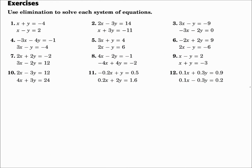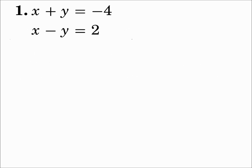Use elimination to solve each system of equations. Number one: x plus y equals negative 4, and x minus y equals 2. First, make sure the equations are lined up — you have the x's, then the y's, then the equal signs, and then the constants. Now we select a variable to eliminate. The x's have the same coefficient and the y's have the same coefficient. We could do either one, but let's choose the y's. So we'll eliminate the y's.